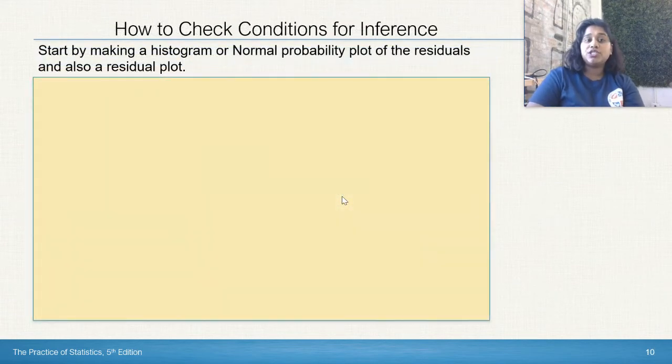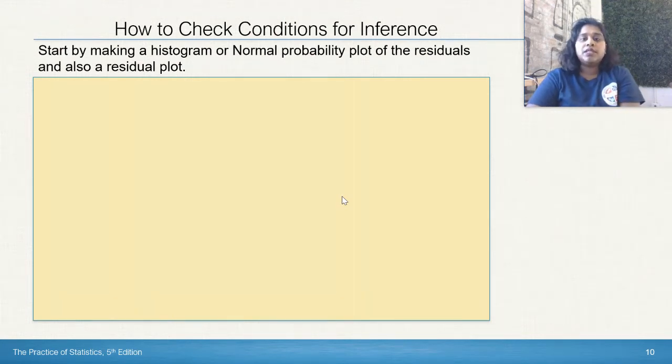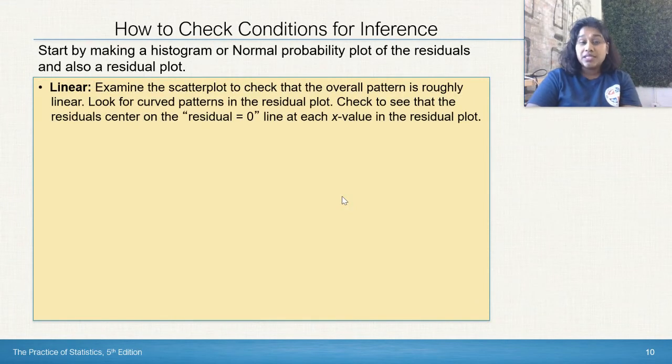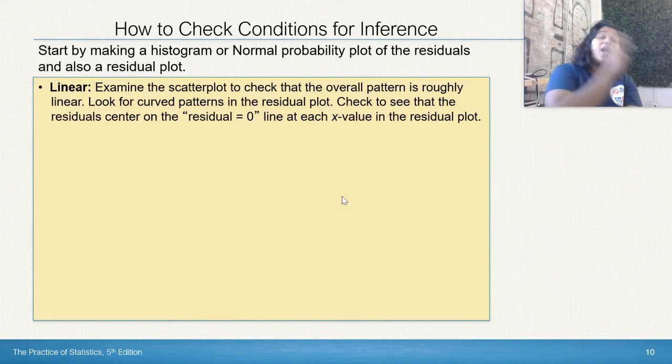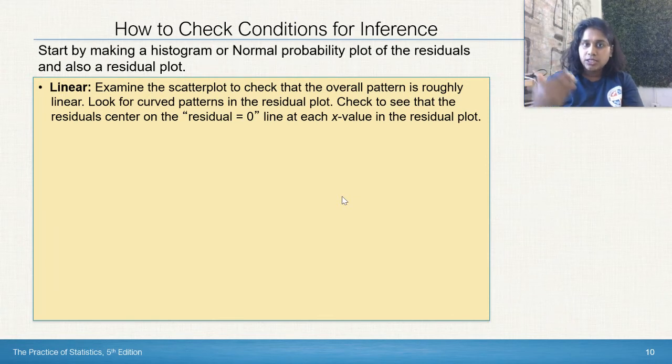How do we check conditions for inference? We start by making a histogram, not a bar graph, a histogram or a normal probability plot of the residuals, and then we're also going to make a residual plot. This chapter is talking about a lot of old prior knowledge. One of the main reasons why I wanted to talk about it is because it's going to start to connect the dots between things that didn't make sense before.